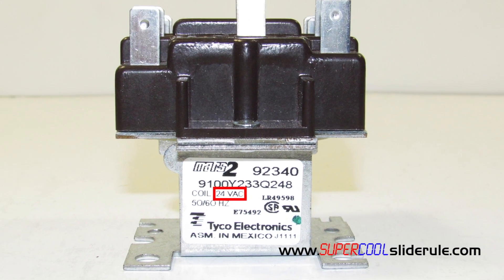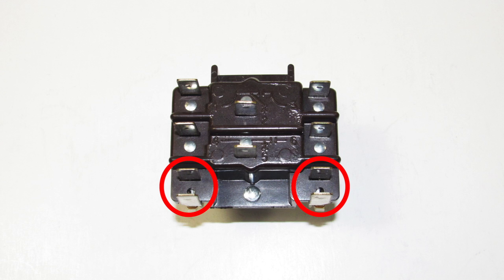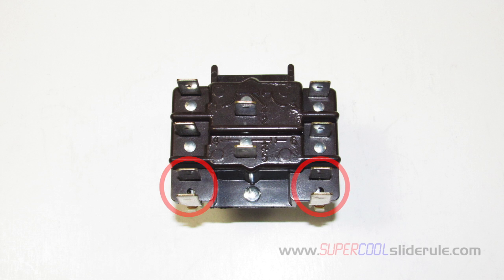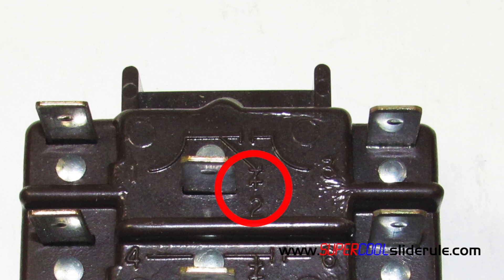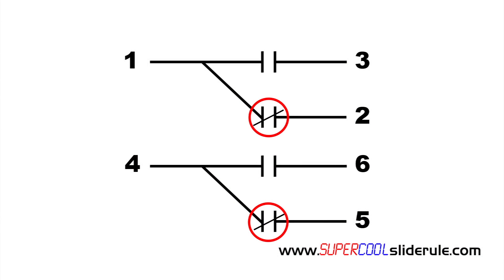When 24 volts is supplied to these two terminals, the relay should switch the terminals that have continuity. The symbols located here indicate that there should be continuity between terminals 1 and 2, and continuity between terminals 4 and 5 in the normal position. Normal position means no electricity is being supplied to the coil.